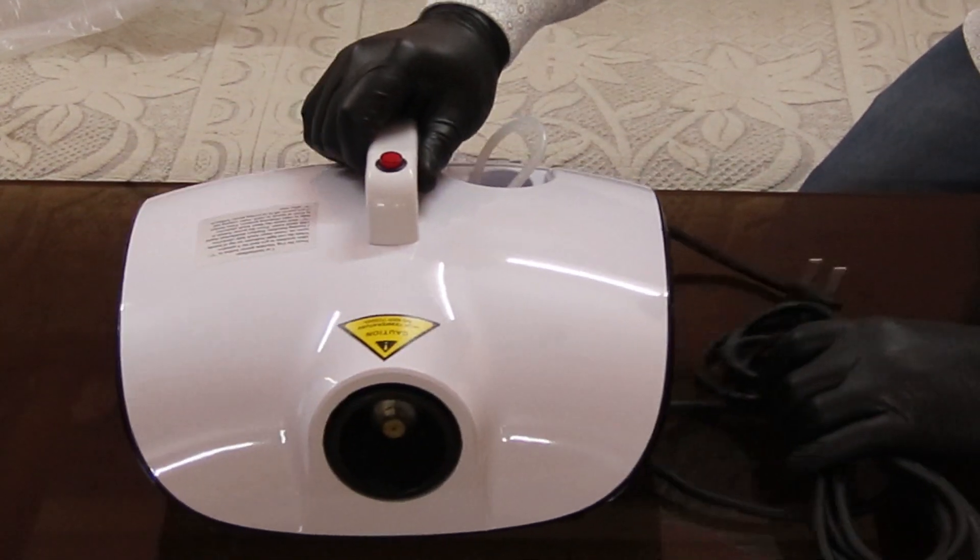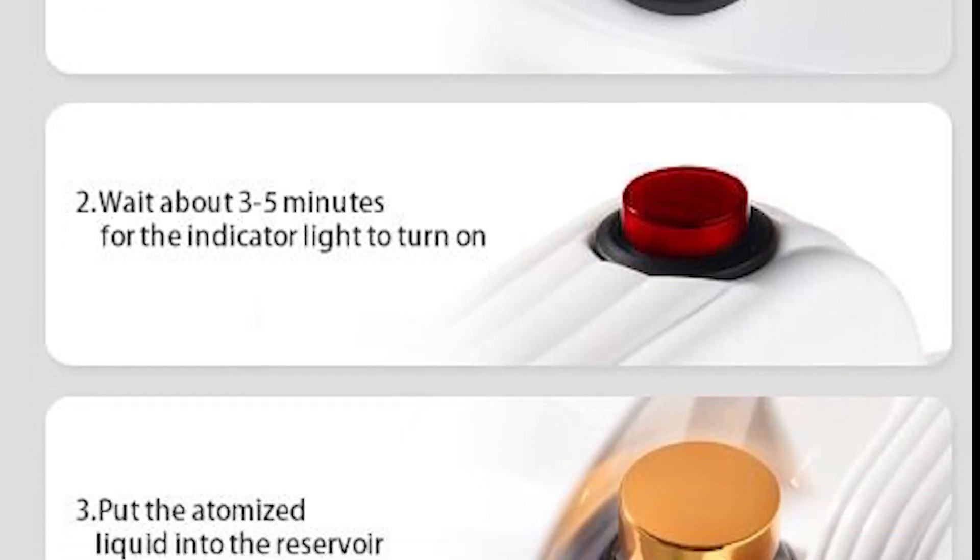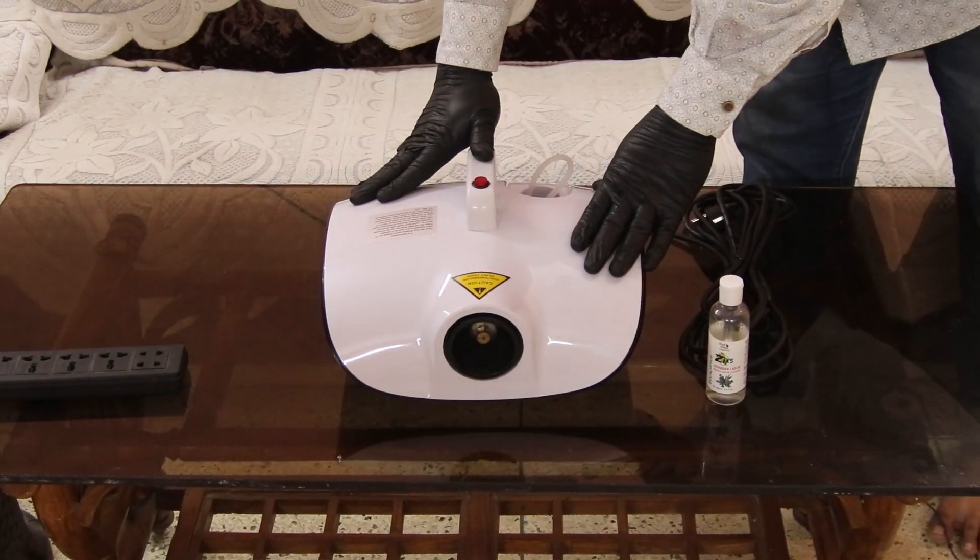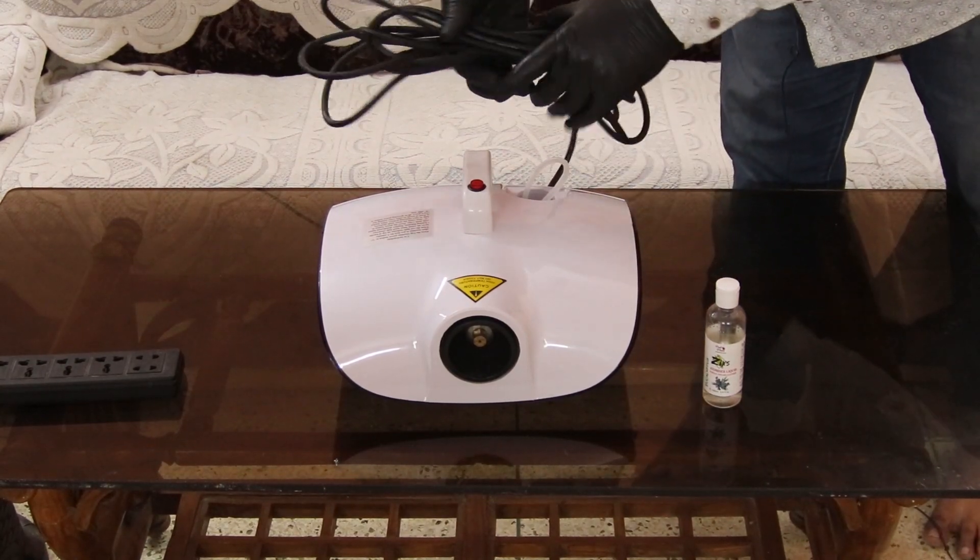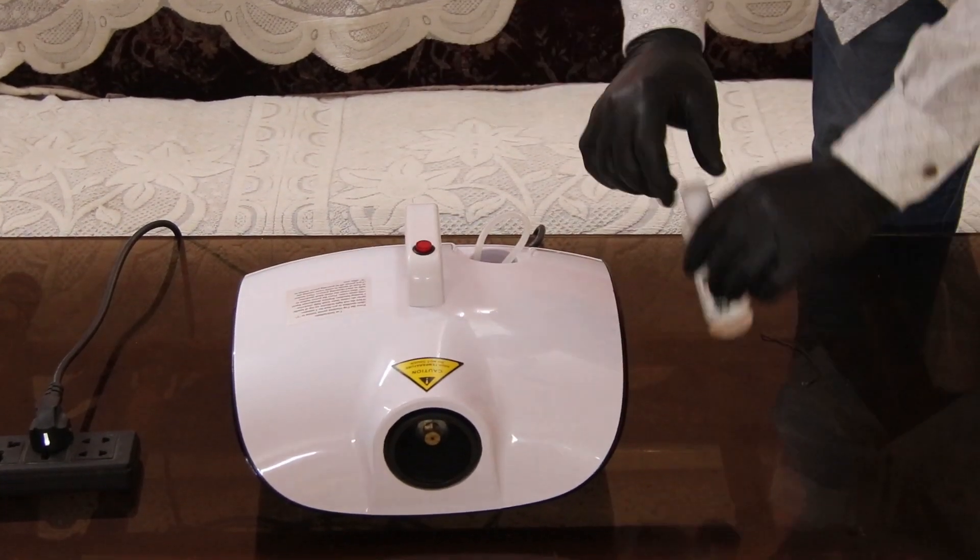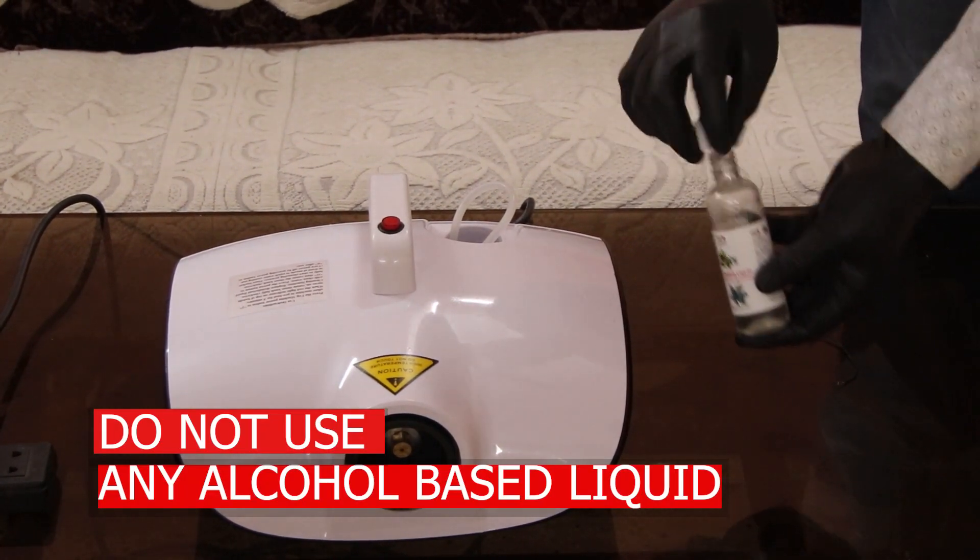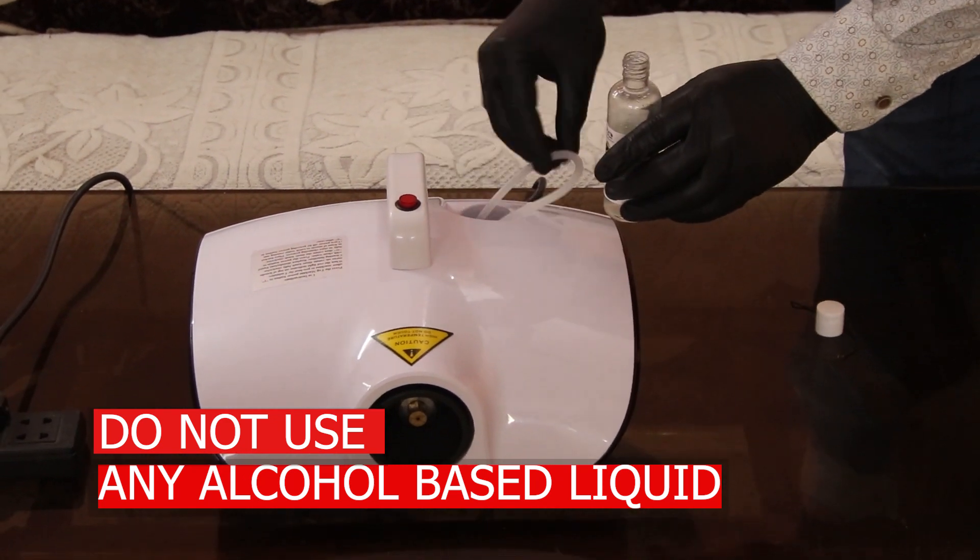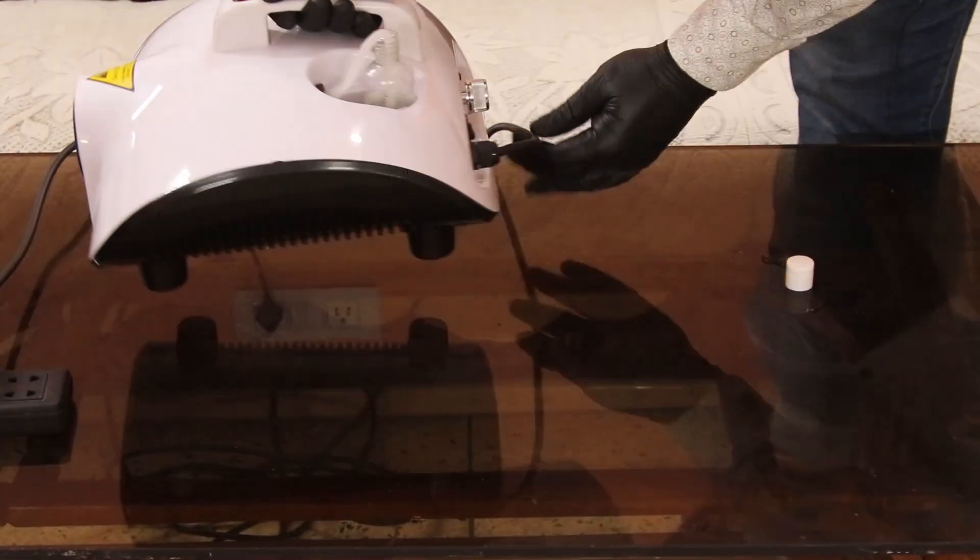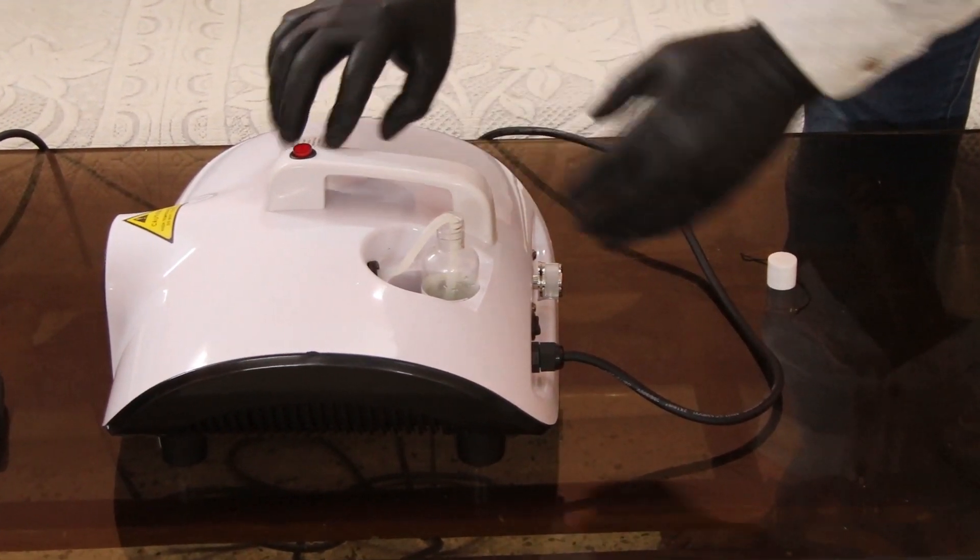So now let me tell you the operation of this machine. First we will plug the wire. Now you can hear the sound, the fan has started inside the machine. Now this is the pink plums atomizer liquid. We will insert the pipe in the atomizer liquid and we'll keep the bottle overhead. Now we have to wait for at least three minutes for this indicator light to get on.